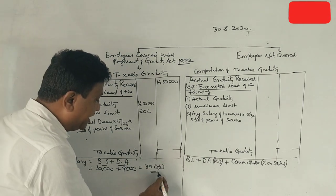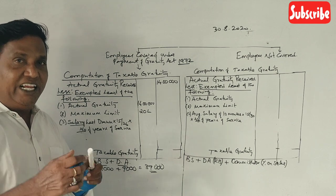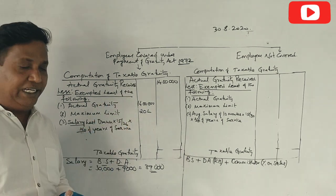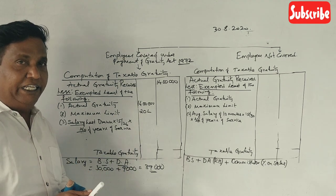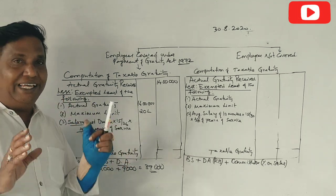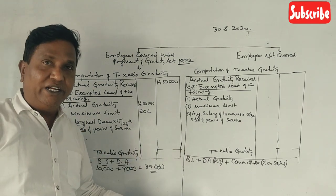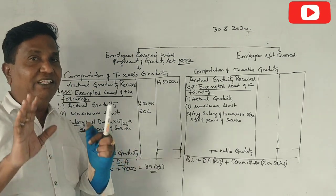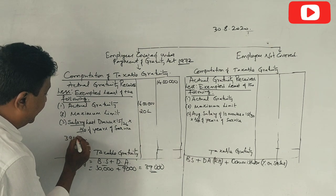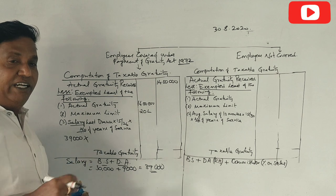So, the salary for the purpose of being covered under the Gratuity Act at retirement time is: last drawn salary = 30,000 + 9,000 = 39,000 rupees. This is then multiplied by 15 divided by 26.